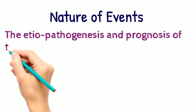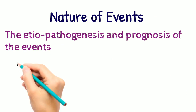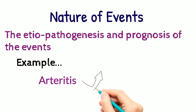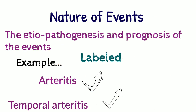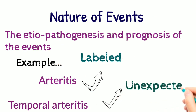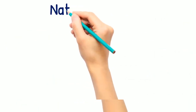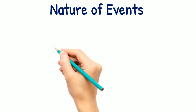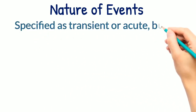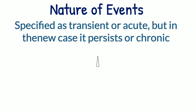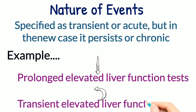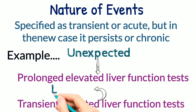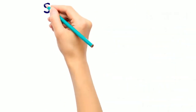Nature of events: the etiopathogenesis and prognosis of the event must be considered while judging expectedness. For example, if arteritis is expected in the RSI document, then temporal arteritis should be considered unexpected due to the associated additional risk and poorer prognosis. If the RSI document lists an event specified as transient or acute, but in the new case it is persistent or chronic, then it would be considered unexpected. For example, prolonged elevated liver function test is considered unexpected when the labeling states only transient elevated liver function test.